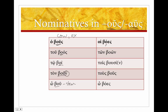Now moving on to the plural: boes — no contraction — ton boon, tois boosin — there's our stem plus the -sin — tus boos. We do get a contraction there, and o boes. Now the way to distinguish between ho boos and tus boos is going to be of course either the context or our articles. In nouns that end in -oos, we're going to see that stem in the nominative and accusative singular, as well as the vocative singular, and the dative and accusative plural, although here we really do have something like a contraction going on. All the others are just going to have the omicron stem.